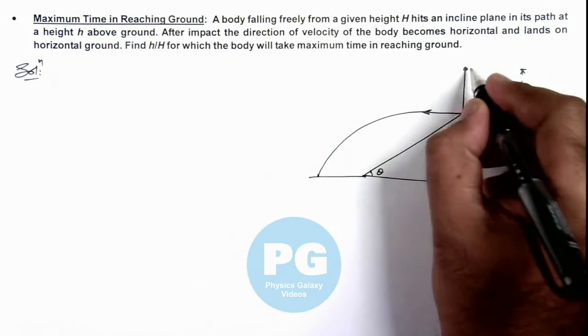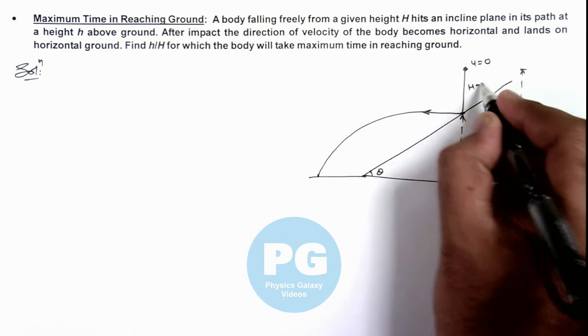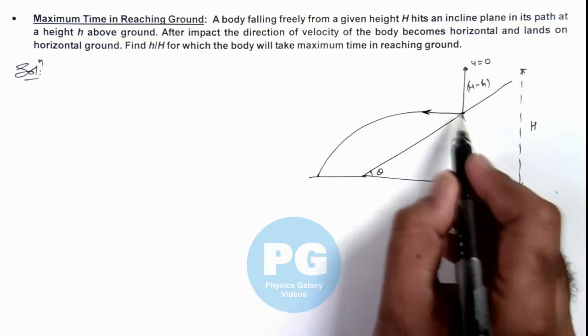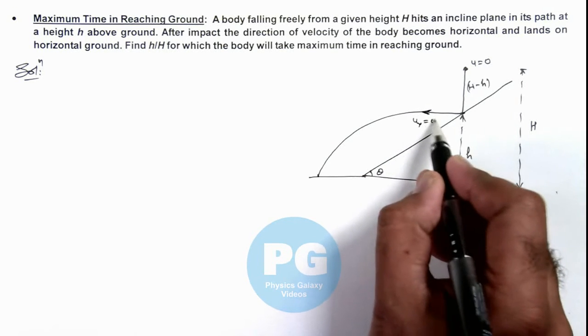Initially when it is dropped with initial speed zero, it has fallen a distance H minus h. Then as it is projected horizontally after collision, again its velocity in y direction becomes zero.